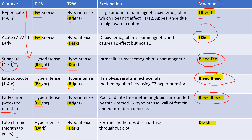Then we come to late chronic hematomas. The mnemonic is 'DIE DIE,' meaning dark dark. So for late chronic hematomas you will have T1 hypo intense and T2 also hypo intense.